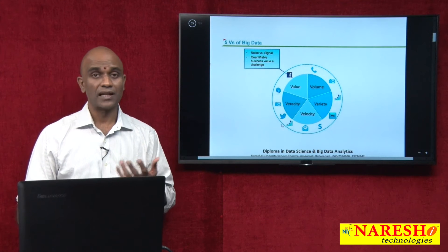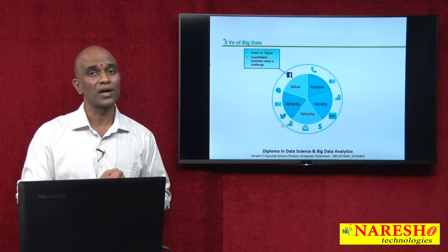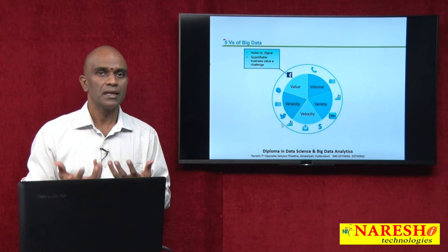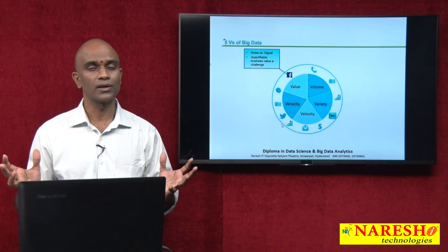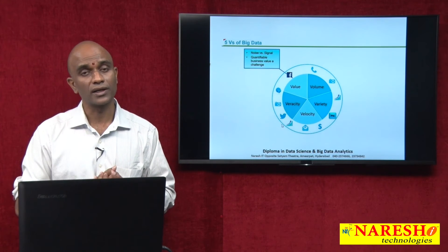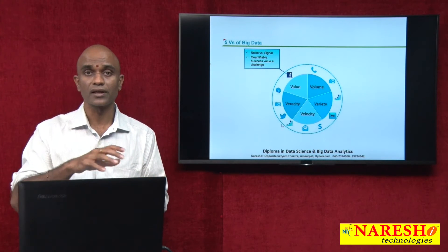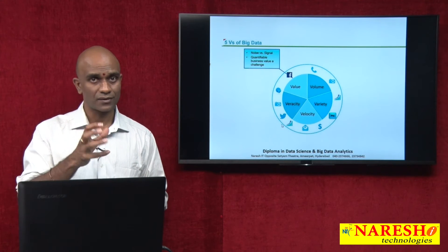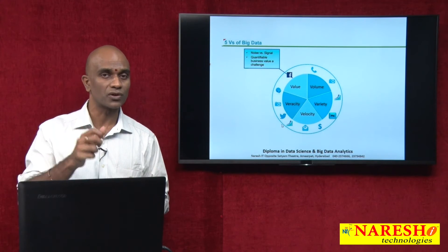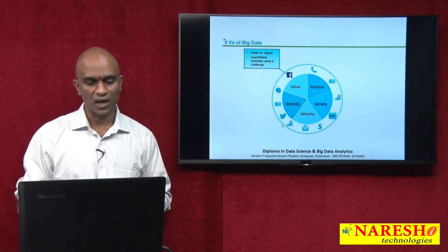Moving on to value — of all the Vs, the most important is value. Companies and organisations want to monetise their data and get value out of it. That is the fifth V. They want to remove the noise, quantify the signal, and get actionable insights. Data is like crude oil, and from it we need to get the refined fuel — the insights. Once we clean the raw data, the noise is removed. Once we get insights, they should be actionable; if you cannot take action on them, they are not truly useful. That is what we mean by quantifiable business value.